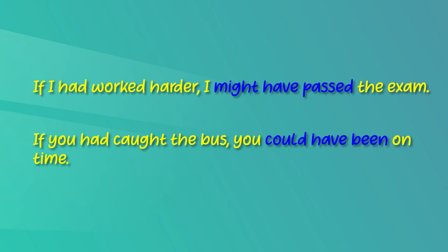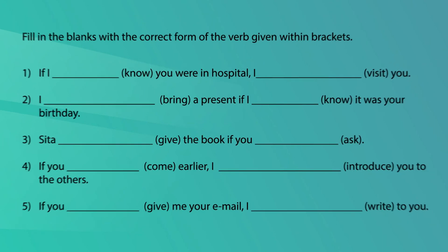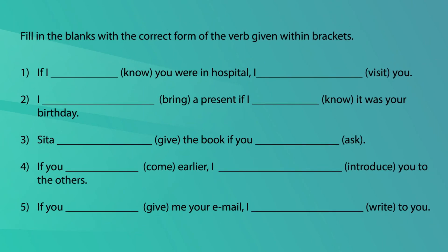I hope now you can understand type 3 conditional sentences. Now let's do an activity to practice what you have learnt. In this activity there are 5 sentences with blanks. You have to fill the blanks with the correct form of the verb given within the brackets. Pause the video and do it.